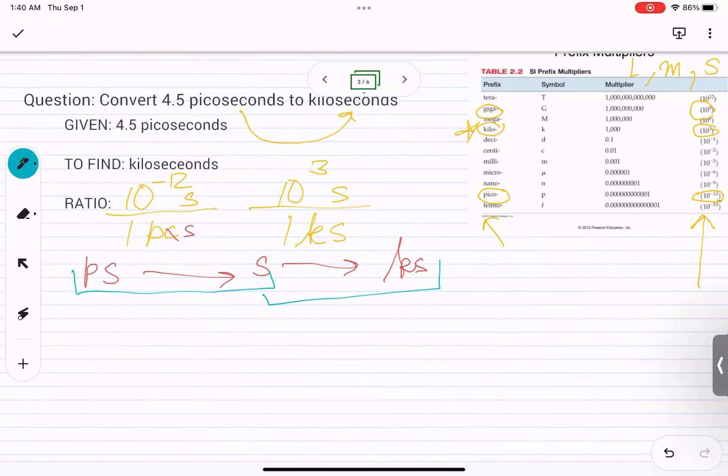So let's start with what we are given. We are given 4.5 picoseconds. And you have to multiply it with something so that we end up getting kiloseconds in the end.